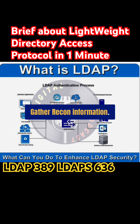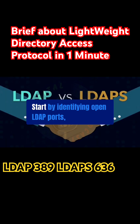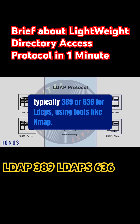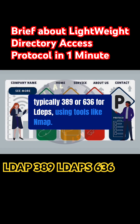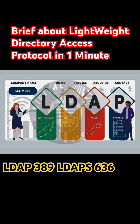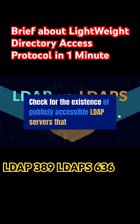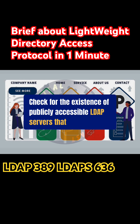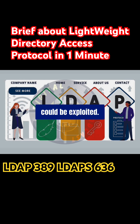Gather recon information. Start by identifying open LDAP ports, typically 389 or 636 for LDAPs, using tools like NMAP. Check for the existence of publicly accessible LDAP servers that could be exploited.